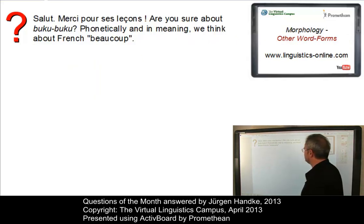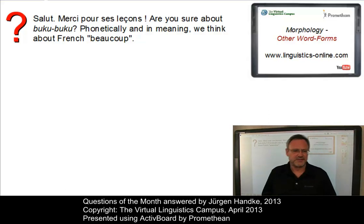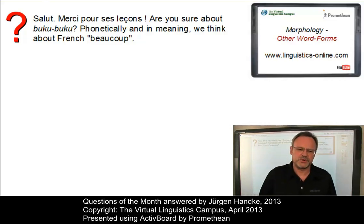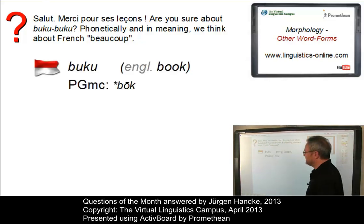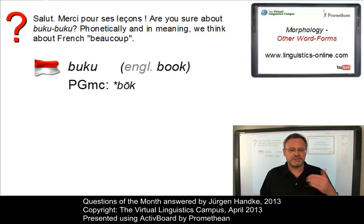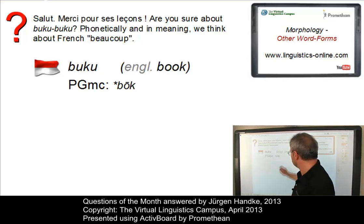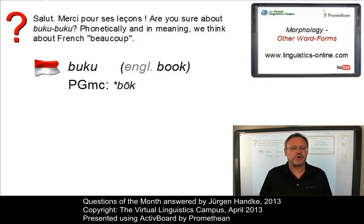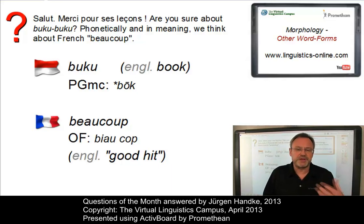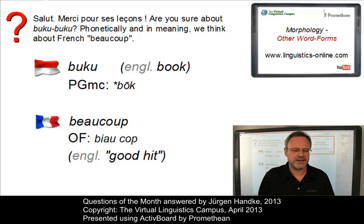Here is a morphological phenomenon. A user asked whether Indonesian 'buku' and French 'beaucoup' are related. The similarity is only accidental. Indonesian 'buku,' which is clearly a loanword from present-day English 'book,' can be traced back to Proto-Germanic. It has no connection to French 'beaucoup,' which was derived from Old French 'beau coup,' literally meaning 'beautiful hit.' So the relationship the user speculated about is entirely accidental.